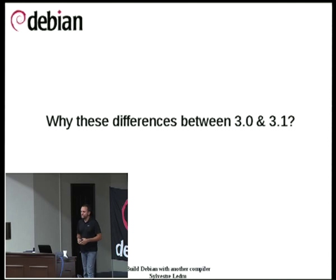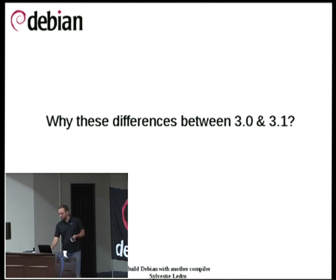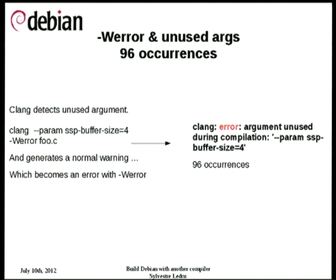Now I'll talk about the difference between Clang 3.0 and 3.1. We increased the number of failures by 4%. One of the most recurrent errors is a GCC argument — param-ssp-buffer — which is used in many programs in the archive and generates a warning. Many packages in the archive are built with the -Werror flag, which surprised me greatly. Since Clang detects that this flag is unused during compilation, it triggers a warning, and because of -Werror, it becomes an error.